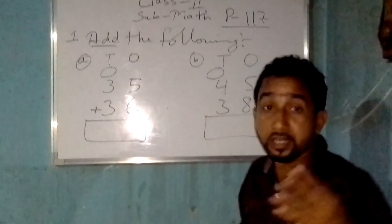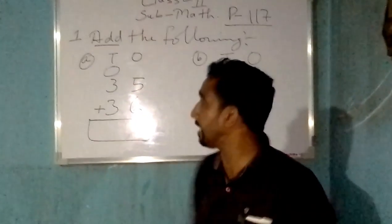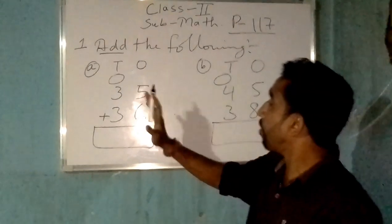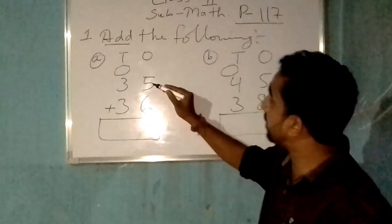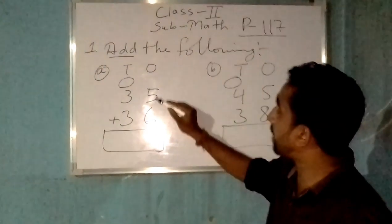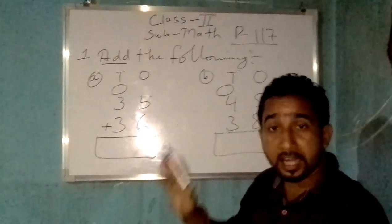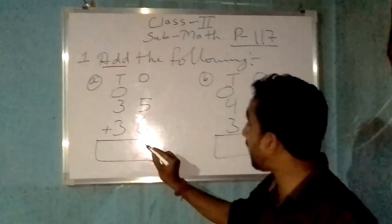Now let me tell you why this circle is here. This circle is to carry out a number. Because when I add this one place number, 5 plus 6, clear, I will get how much? 11. If I add 5 plus 6 I get 11.